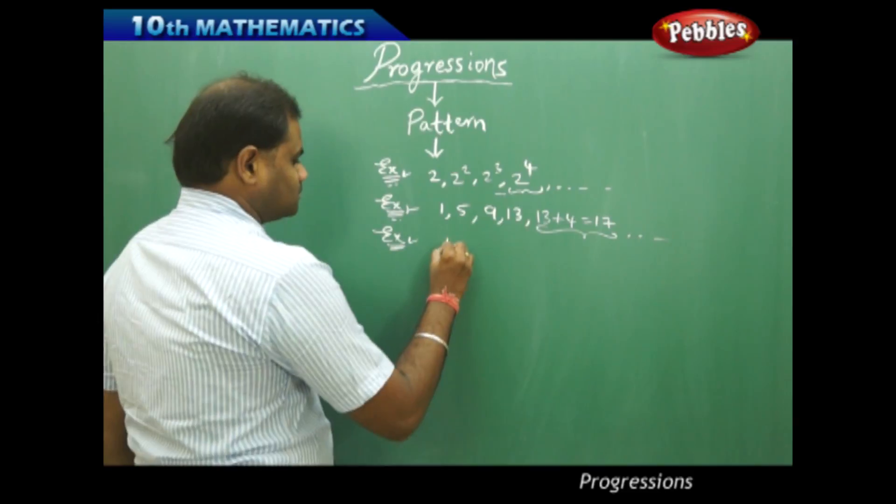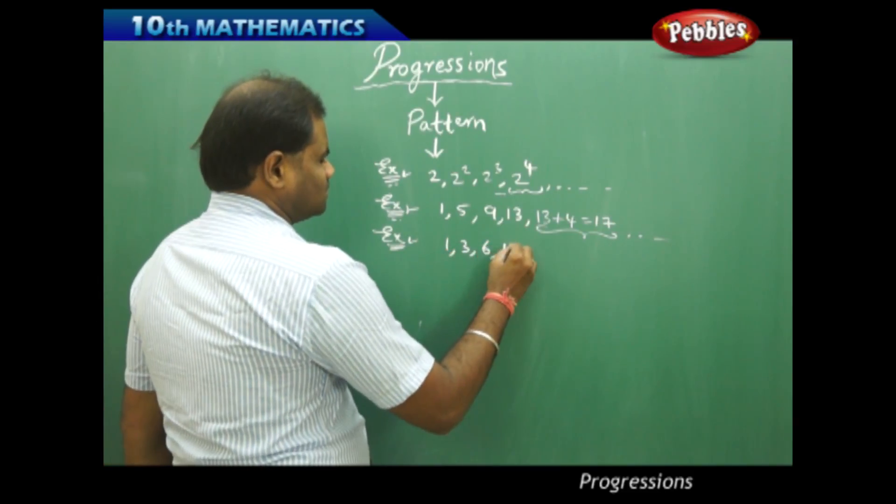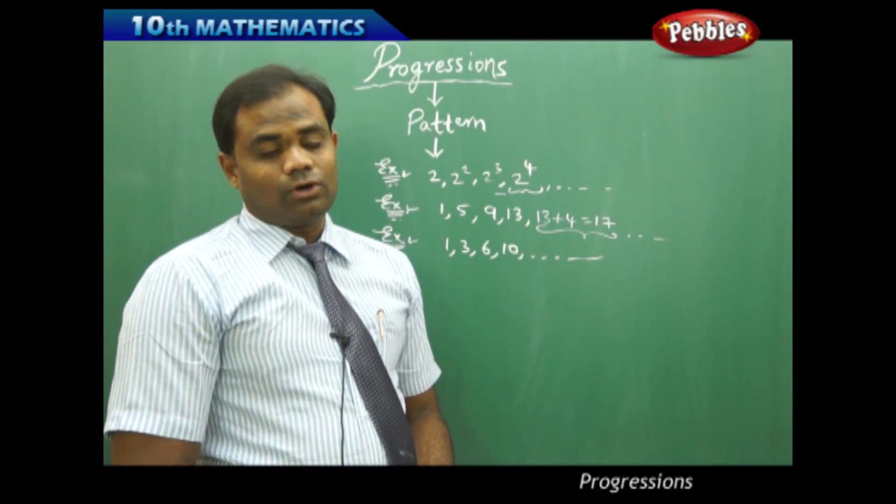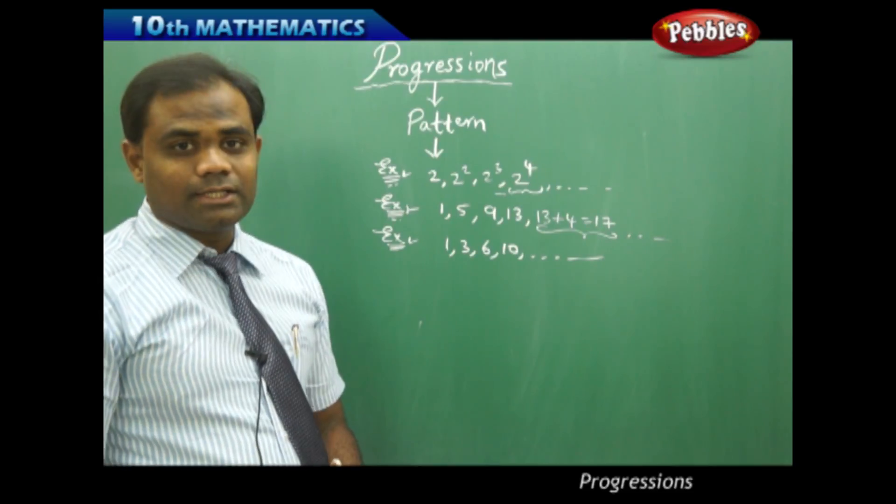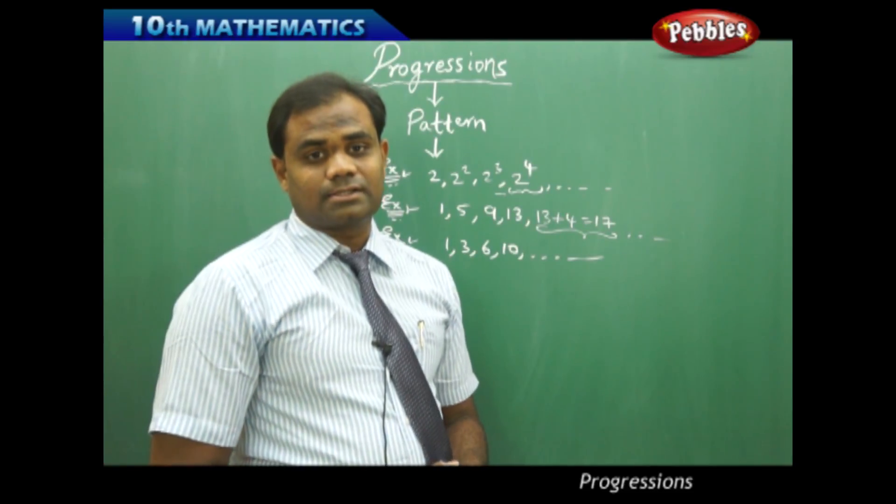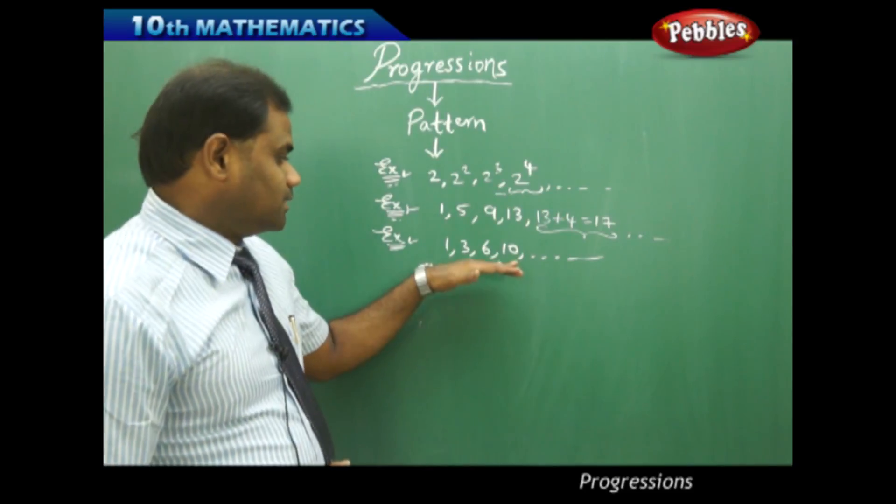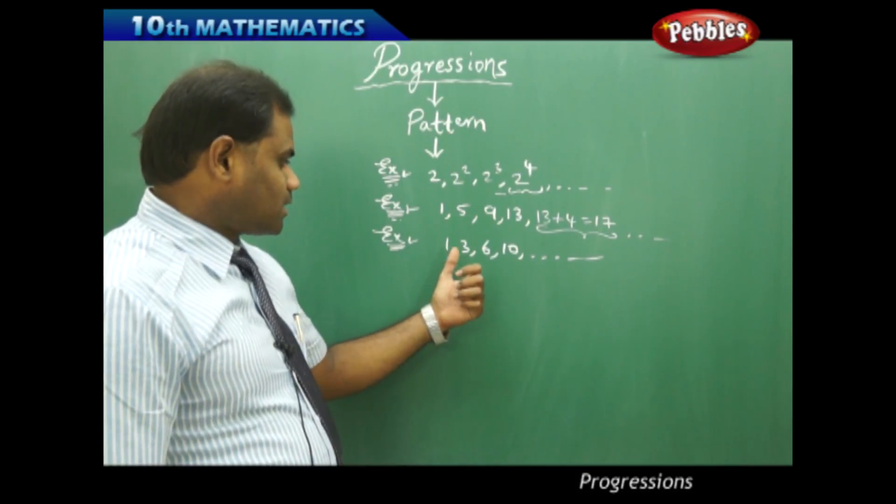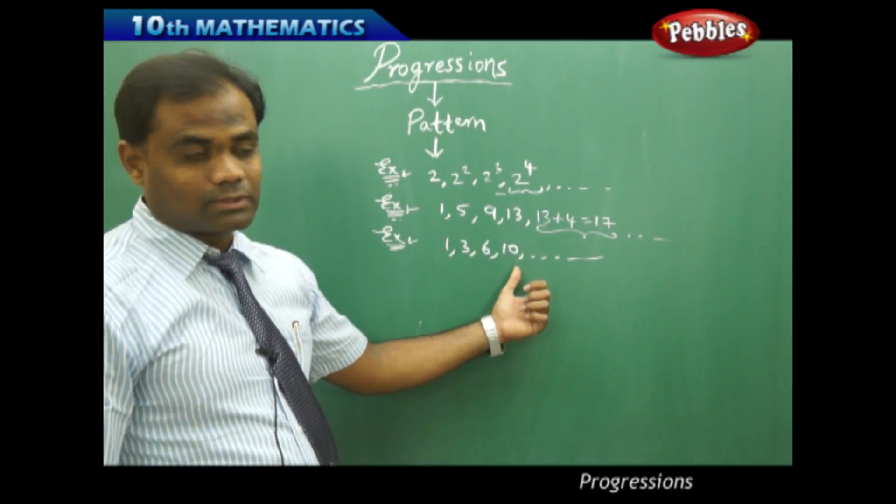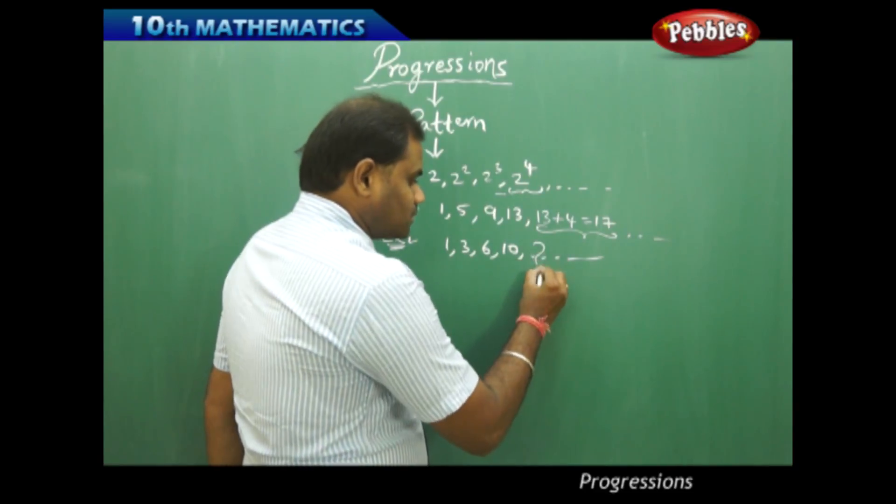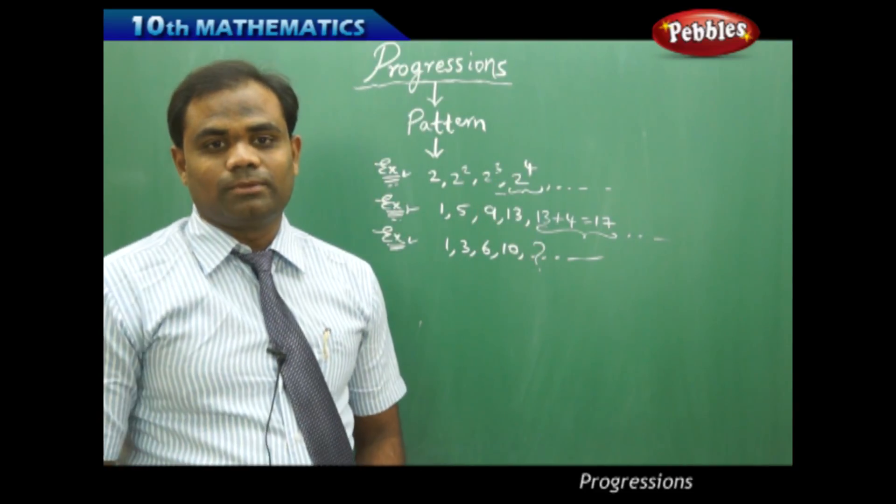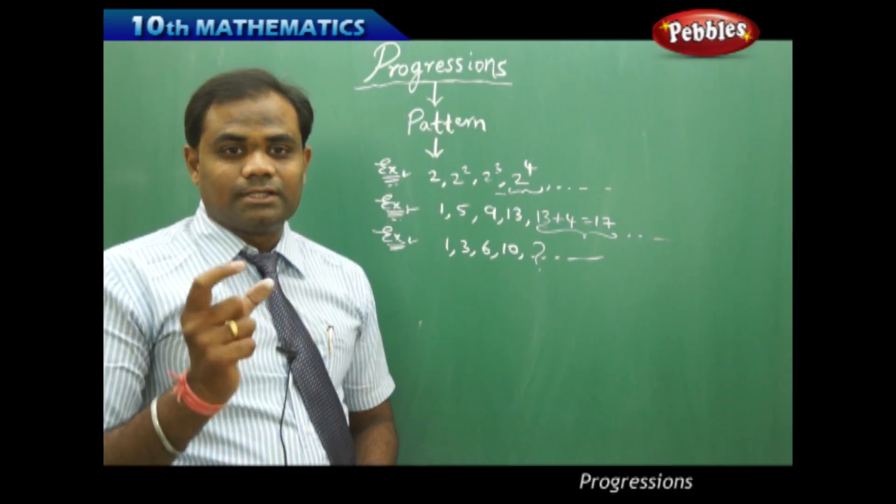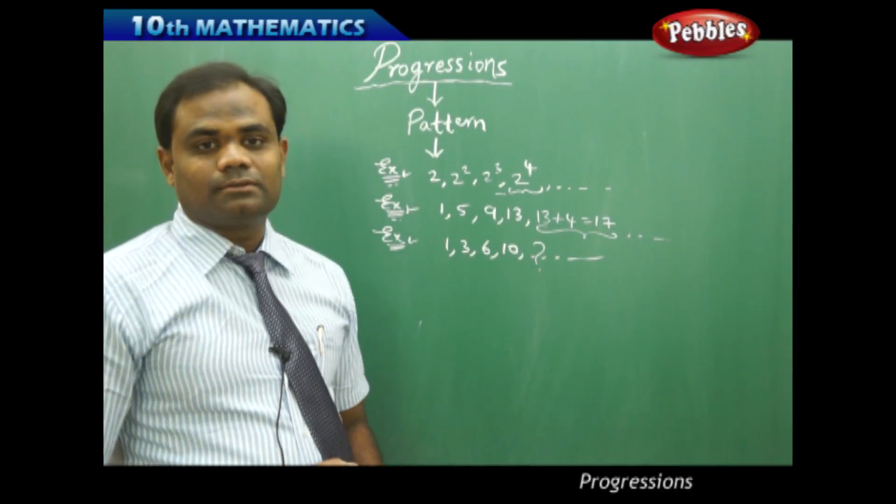For example I have, how do I know the next term here. All patterns are not easy because some patterns are easy to construct but some patterns are very complex. Say for example with this example problem 1, 3, 6, 10 etc. So my first term is 1 and my second term here is 3 and the third term 6 and the fourth term 10 then what is the fifth term is the biggest question of the problem.